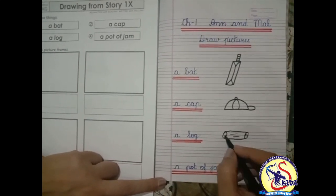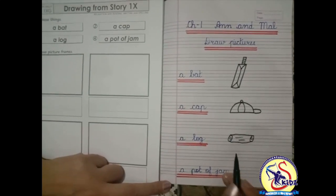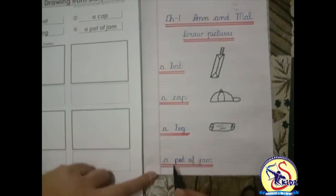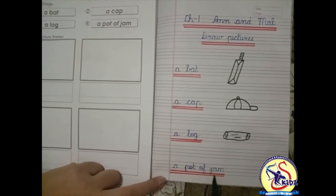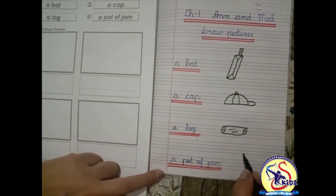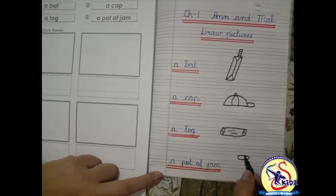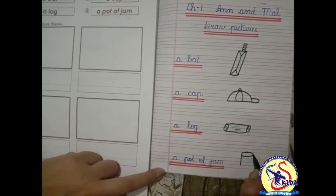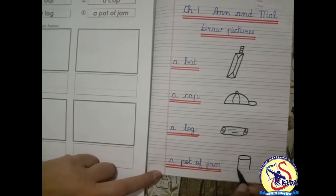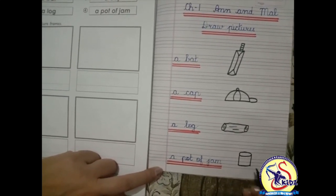Now we have to draw the picture of a pot of jam. Make an oval, standing line, one more standing line, sleeping line. This is the picture of a pot of jam.